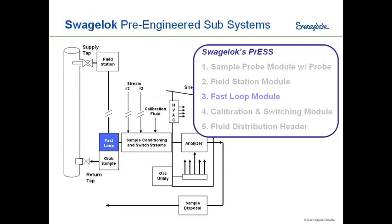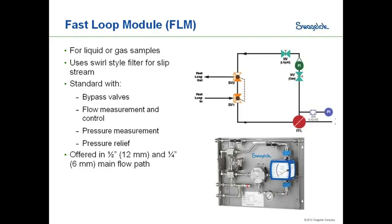The third unit is the fast loop module, which is quite an interesting one. Fast loops are used mainly with liquid samples, because liquid samples must be taken and returned to the process, though gas samples also sometimes use fast loops. For this reason, we produce two versions: a half-inch version for higher liquid flows and heavier liquids, and a quarter-inch version suitable for lighter liquids and gases.